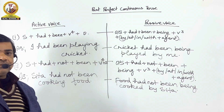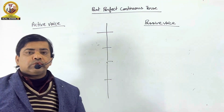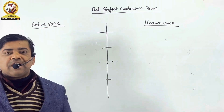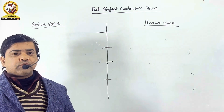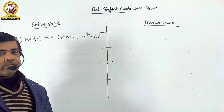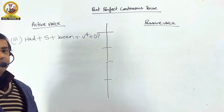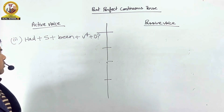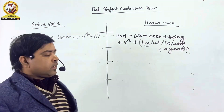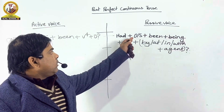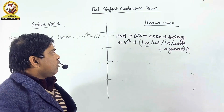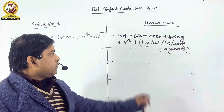Now you can take a screenshot. The third structure formula is used to make yes/no questions. In active voice: had + subject + been + V4 + object? In passive voice: had + object/subject + been + being + V3 + by/at/in/with + agent?